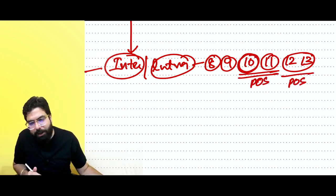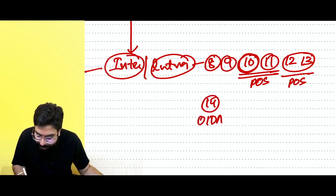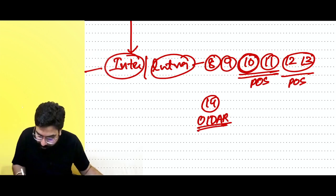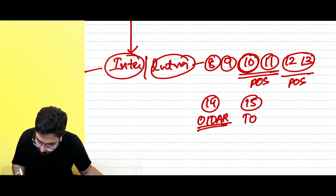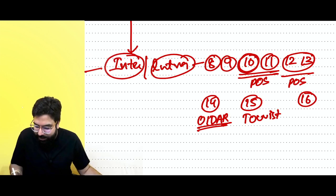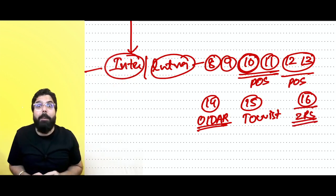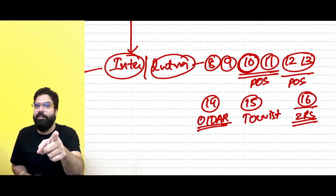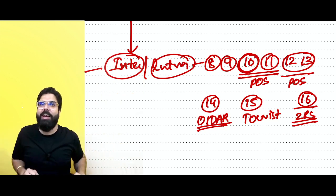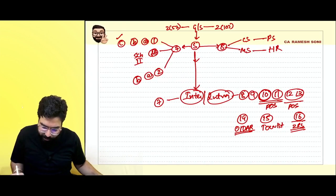Zero rated supply summary: exports are zero rated; supplying to an SEZ unit or developer is zero rated. To claim the zero rated benefit: either give an LUT and claim ITC refund, or pay the IGST and claim IGST refund. Sections covered in the chapter have all been addressed. This is a C-graded chapter but must be learned for interlinking — key definitions including India, zero rated supply, and export of service must be remembered.